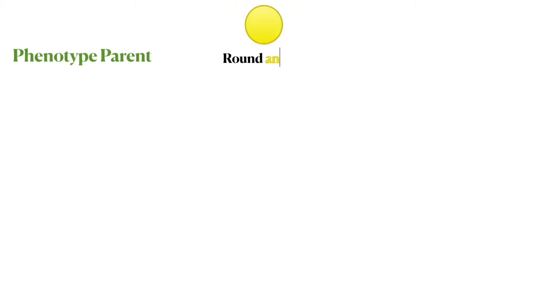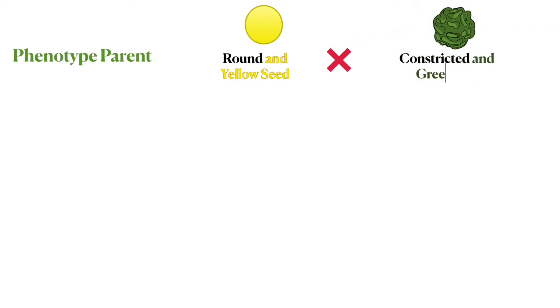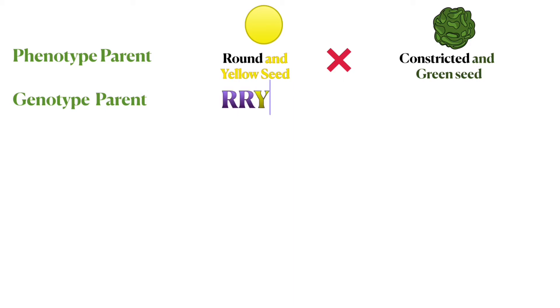Mendel crossed two pure breed parents of a pea plant between round yellow seed and constricted green seed. Pure breed means both parents are homozygous. Round and yellow seed is homozygous dominant, while constricted and green seed is a homozygous recessive trait.